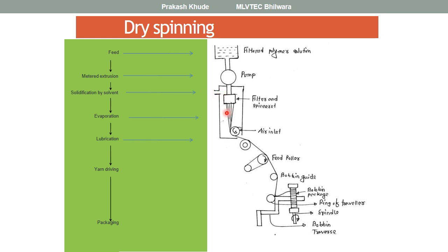Unlike melt spinning systems where solidification of the polymer takes place with cold air, in dry spinning systems it is done by hot air. With the help of hot air, evaporation of the solvent takes place. After that, lubrication is applied, followed by winding operations.